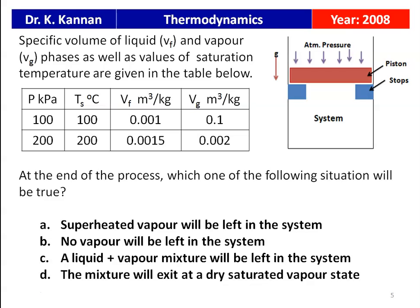The first question: at the end of the process, which situation will be true? Option A: superheated vapor will be left in the system. Option B: no vapor will be left. Option C: a liquid and vapor mixture will be left. The correct answer is superheated vapor will exist in the system — the system will have only superheated vapor. We will see how the solution is obtained in the next slide.